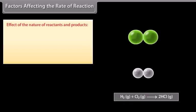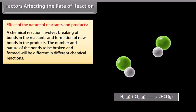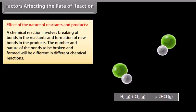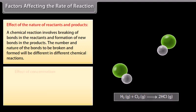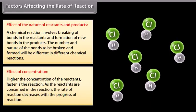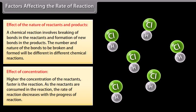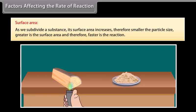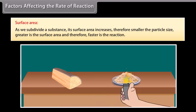Effect of the nature of reactants and products: a chemical reaction involves breaking of bonds in the reactants and formation of new bonds in the products; the number and nature of the bonds to be broken and formed will be different in different chemical reactions. Effect of concentration: higher the concentration of reactants, faster is the reaction; as the reactants are consumed, the rate decreases with progress. Surface area: as we subdivide a substance, its surface area increases; therefore, smaller the particle size, greater is the surface area and faster is the reaction.